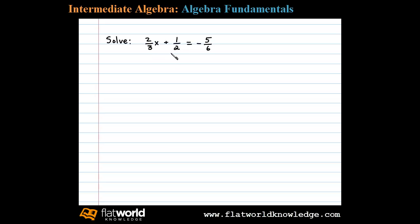Here we're asked to solve a linear equation. Let's begin by subtracting 1/2 on both sides. Now on the left side we'll just be left with 2/3x equals now negative 5/6 minus 1/2, which requires a common denominator.